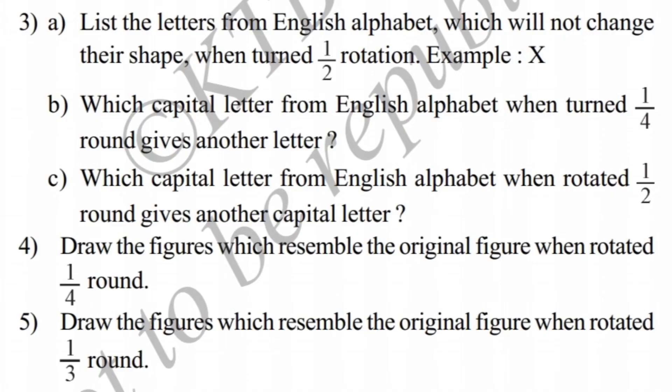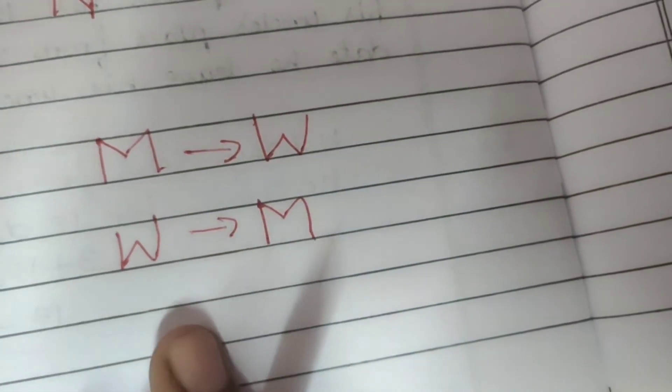Next question: which capital letter from the English alphabet, when rotated half round, gives another capital letter? Half rotation means turning upside down. So M turned upside down gives W. Or W turned upside down gives M. These two are the answers.